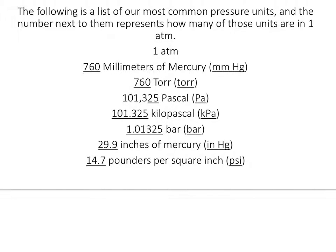The number next to each unit represents how many of those are in one ATM. So: 760 millimeters of mercury — commonly written as mmHg; please keep in mind that mercury is not capital M, it is Hg — 760 of those is one ATM. Or 760 Torr is one ATM. Or 101,325 Pascal equals one ATM. In America we use pounds per square inch for our tires, commonly called PSI. 14.7 PSI is equal to one ATM.